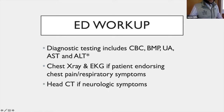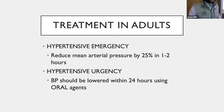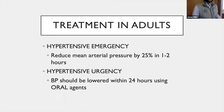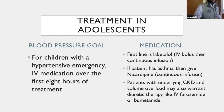In adults with hypertensive emergency, we want to reduce the mean arterial pressure by 25% within about two hours using IV medication, while urgency should be lowered within 24 hours using oral agents. There are some similarities in the approach for adolescents, but also important differences.